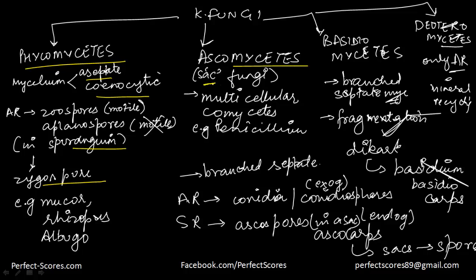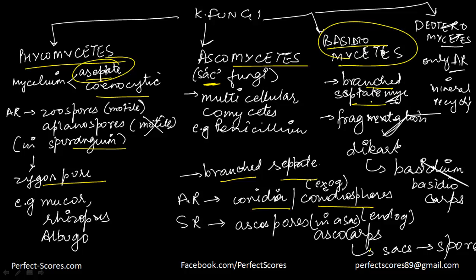Ascomycetes, also known as sac fungi, can be multicellular like Penicillium or unicellular like yeast. Mycelium is branched and septate. Asexual reproduction is through conidia produced exogenously in conidiophores; sexual reproduction is through ascospores produced endogenously in ascocarps. Basidiomycetes also have branched and septate mycelium; fragmentation is the most common reproduction method, with a dikaryon phase giving rise to basidium, basidiocarps, and basidiospores. Deuteromycetes is the imperfect fungus — only asexual reproduction is present and they help in mineral recycling.